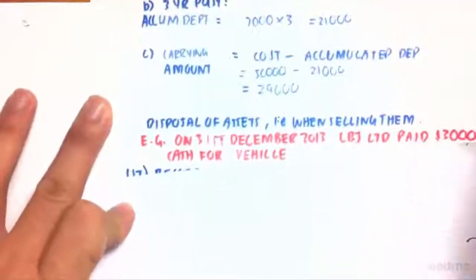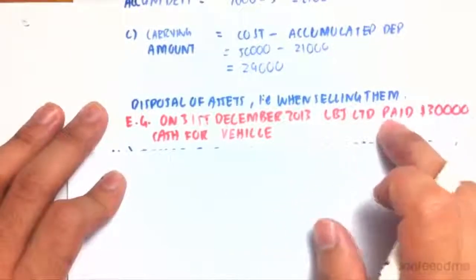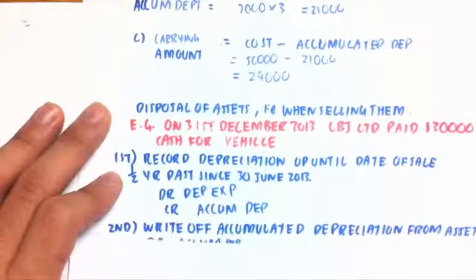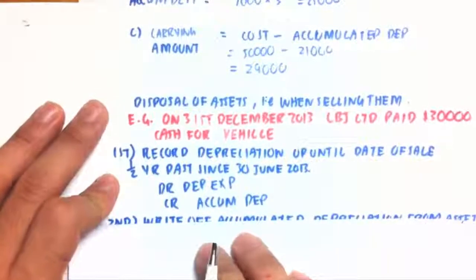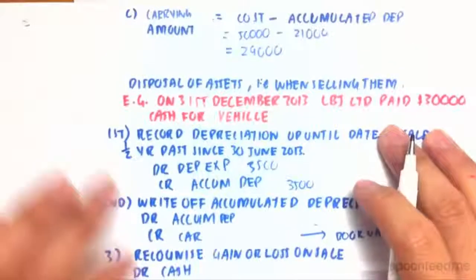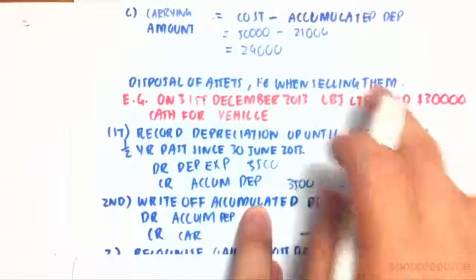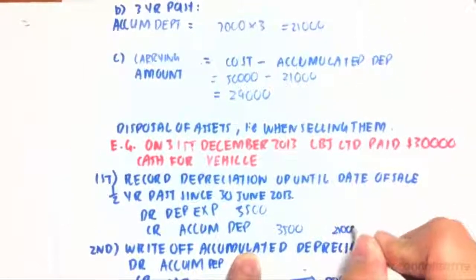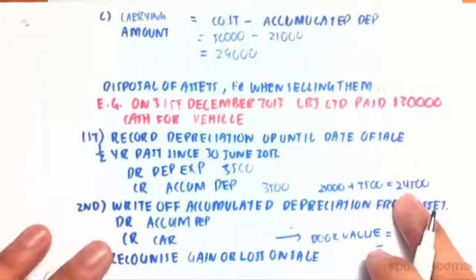When we dispose of that asset, on the 31st of December 2013, LBJ Ltd paid $30,000 cash for the vehicle. First, we need to record depreciation up until the date of sale to make sure accumulated depreciation is up to date. Half a year has passed since the 30th of June 2013, so that's another $3,500 of depreciation. Then we write off the accumulated depreciation: $21,000 from before plus $3,500 gives a total accumulated depreciation of $24,500.